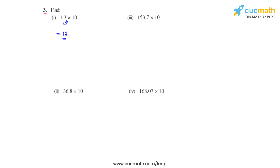Coming to the second bit, we have 36.8 times 10, so the decimal will again move one place towards the right, and the answer that we get for the product of 36.8 and 10 is 368.